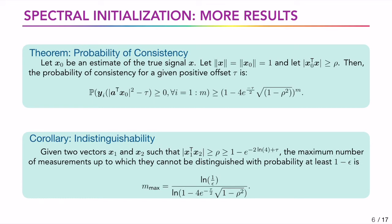The next result is on indistinguishability. Given two vectors x1 and x2 such that x1 transpose x2 is greater than rho, the maximum number of measurements up to which they cannot be distinguished with probability at least 1 minus epsilon is ratio of log of 1 by epsilon by log of 1 minus 4 into e to the power minus tau by 2 into square root of 1 minus rho square.